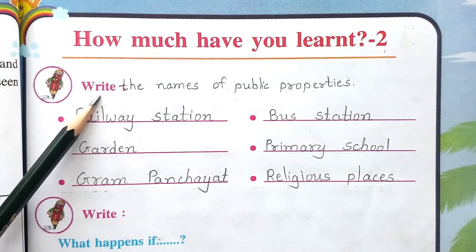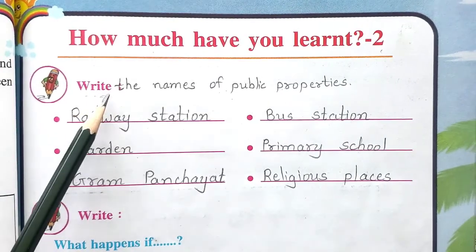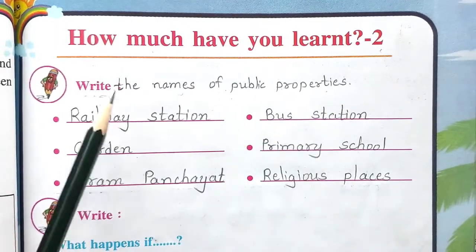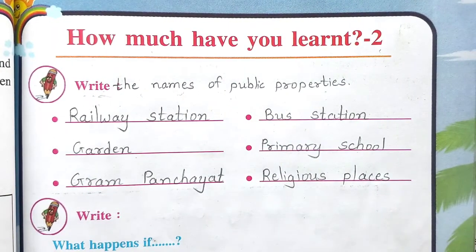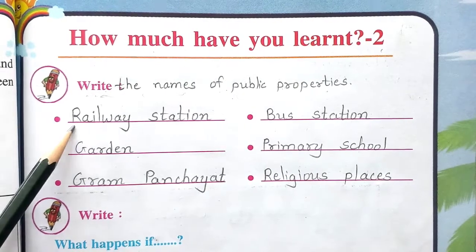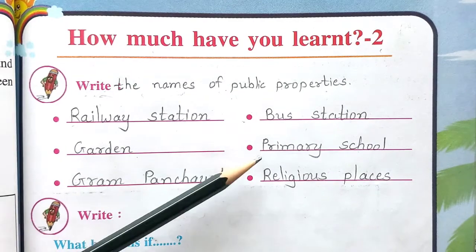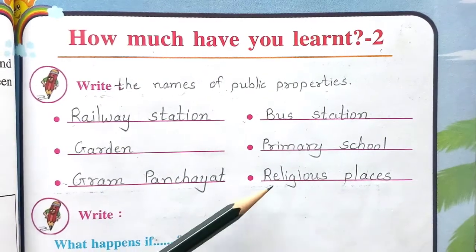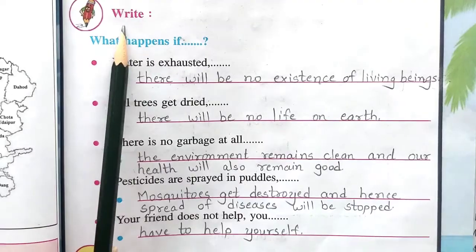First, write the names of public properties. Here we need to write the names of some public properties: railway station, bus station, garden, primary school, gram panchayat, religious places. All these are called public properties, so write them here.